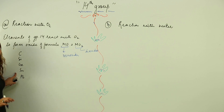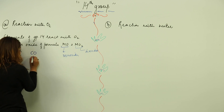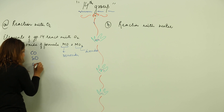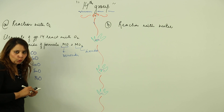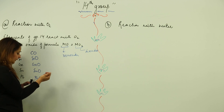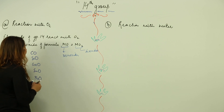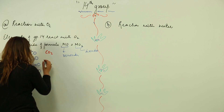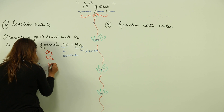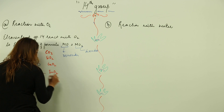The monoxides are: carbon monoxide (CO), silicon monoxide (SiO), germanium monoxide (GeO), tin monoxide (SnO), and lead monoxide (PbO). The dioxides are: carbon dioxide (CO2), silicon dioxide (SiO2), germanium dioxide (GeO2), tin dioxide (SnO2), and lead dioxide (PbO2).